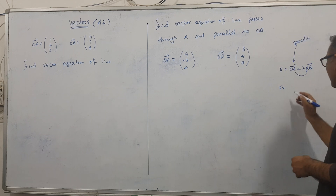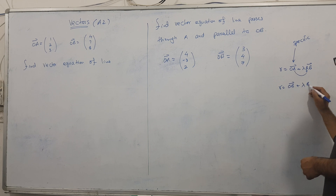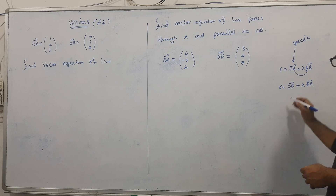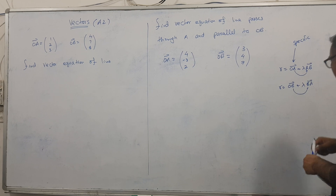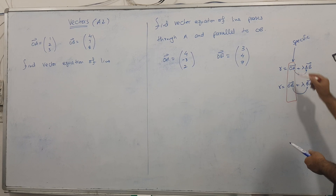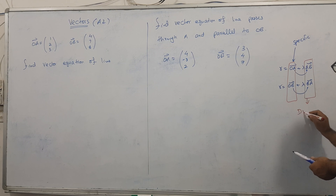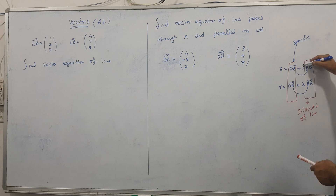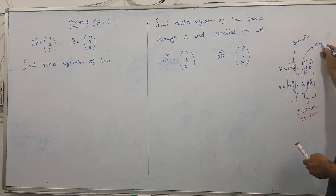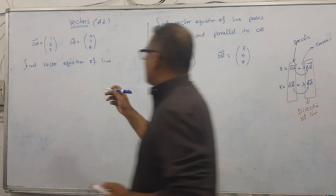If you start from OB instead of OA, then the direction vector must be BA, not AB — there's a rule here. Also, I want to discuss: this part is called the specific point, and this part is called the direction of the line. Lambda is a constant, but it takes different values depending on the situation.